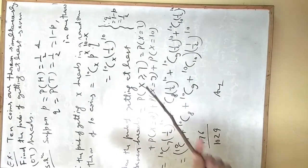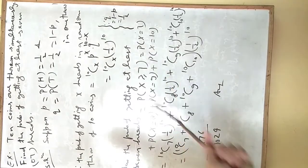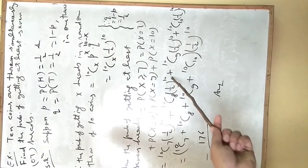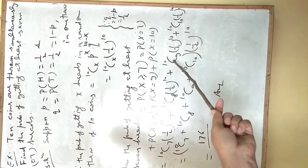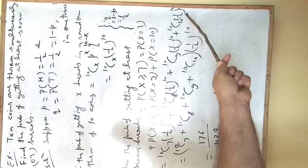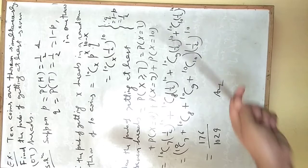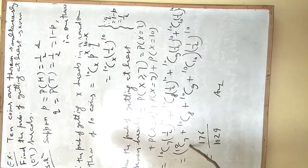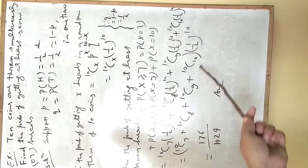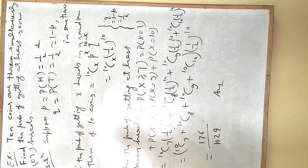So from this formula, P(x=7) is 10C7 by 2 to the power 10, plus 10C8 by 2 to the power 10, plus 10C9 by 2 to the power 10, plus 10C10 by 2 to the power 10. This is 1 by 2 to the power 10, we will take it common, and within bracket 10C7 plus 10C8 plus 10C9 plus 10C10. After calculation, we will get 176 by 1024.